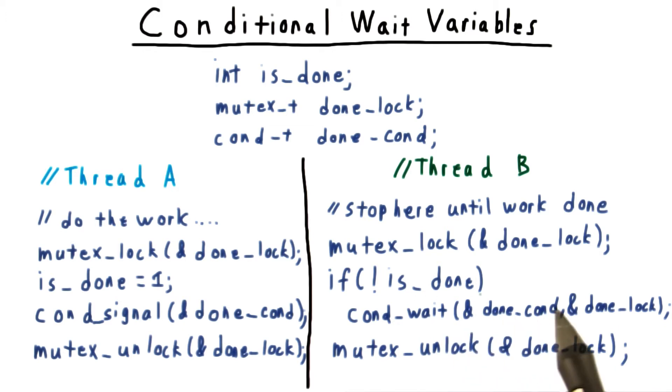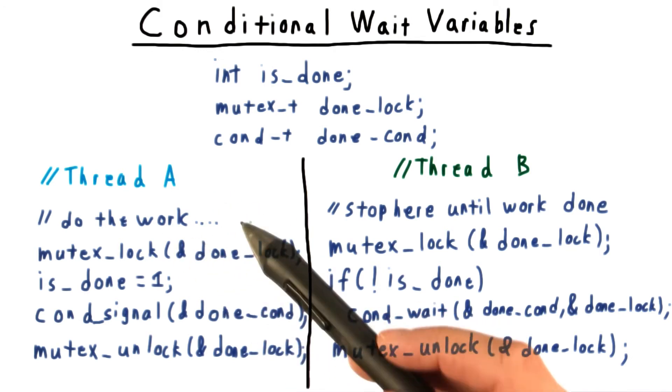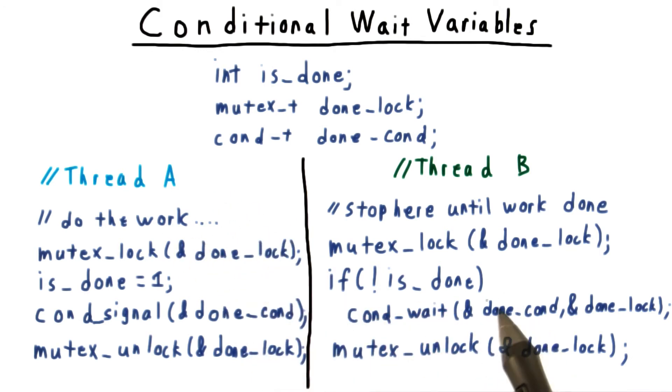Now it is important that this cond_wait not only makes thread B wait, but it also unlocks the mutex. This will allow thread A to acquire the lock, and eventually send the signal. The call blocks until the signal is received, and thread B acquires the lock again. Hence the need to unlock it at the end of the code.